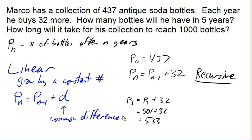So this is the general form of a recursive equation. We always have to have our initial amount, our P₀, and then we have a recursive equation.